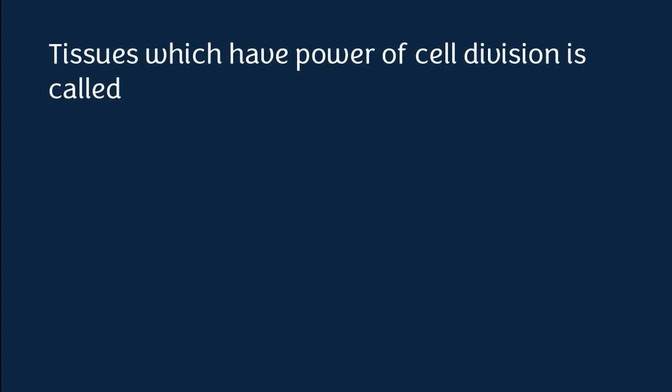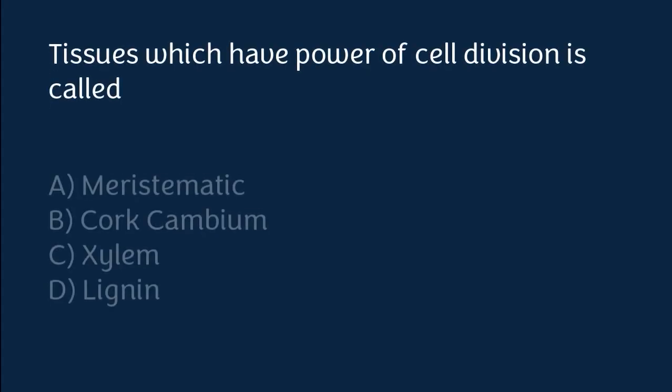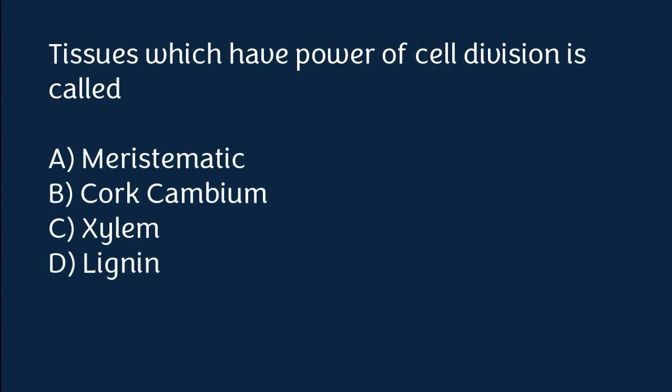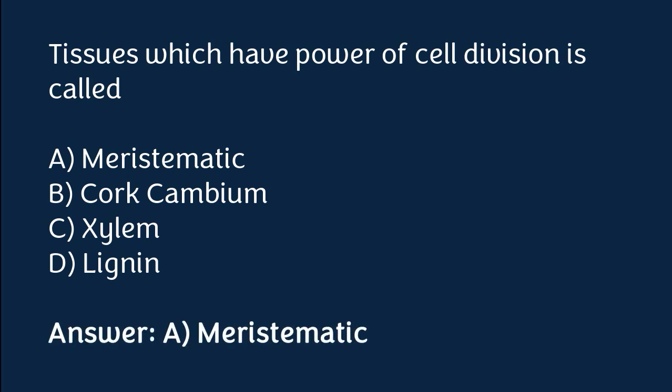Tissues which have the power of cell division are called: meristematic, corp, cambium, xylem, or lignin. The correct answer is option A. Tissues which have the power of cell division are called meristematic.